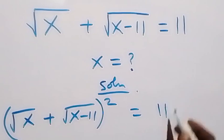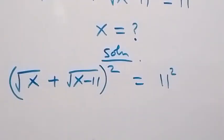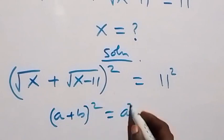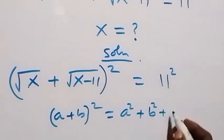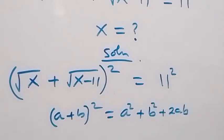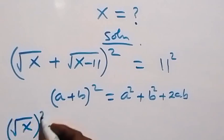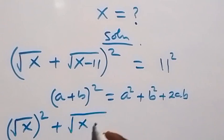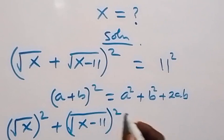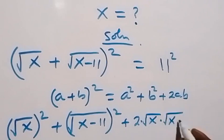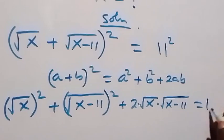That equals 11 squared on the right side. When we have a plus b all squared, this is the same as a squared plus b squared plus 2ab. Applying this here gives us root x squared, plus root of x minus 11 squared, plus 2 times root x times root of x minus 11, equals 11 squared.